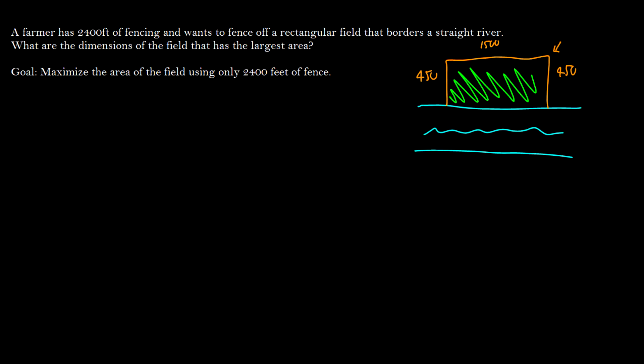So we want to maximize the area of the field while using only 2,400 feet in our perimeter. So how do we do this? Well, like always, same with related rates, we need to use two functions.